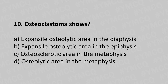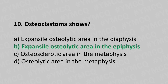Question number ten: osteoclastoma shows option A expansile osteolytic area in the diaphysis, option B expansile osteolytic area in the epiphysis, option C osteolytic area in the metaphysis, option D osteolytic area in the metaphysis. The answer is option B, expansile osteolytic area in the epiphysis.